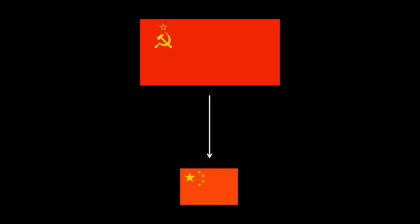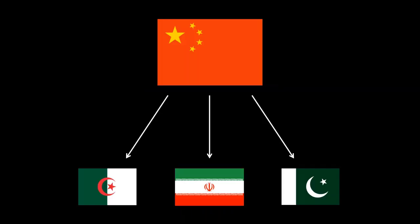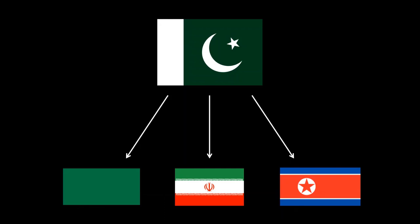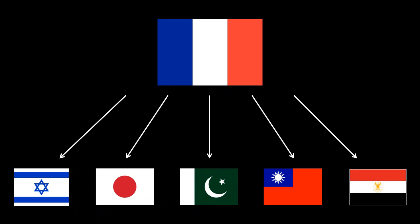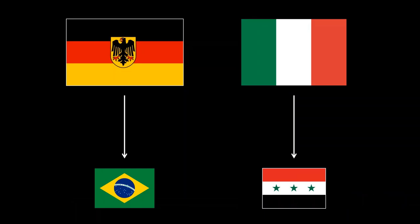The international community wasn't always so good about restricting access to ENR technology. The Soviet Union helped out China with ENR, then China helped out Algeria, Iran, and Pakistan. Pakistan — and more specifically the A.Q. Khan black market network — helped out Libya, Iran, and North Korea. France, the all-time king of ENR sharing, helped out Israel, Japan, Pakistan, Taiwan, and Egypt. In a couple of smaller cases, West Germany helped out Brazil and Italy helped out Iraq. But over time, beliefs about how to restrict proliferation came to focus on ENR technology as the big barrier. The IAEA, under Mohamed ElBaradei's administration, worked very hard to reduce those technologies worldwide and in particular tried to crack down on that A.Q. Khan network.